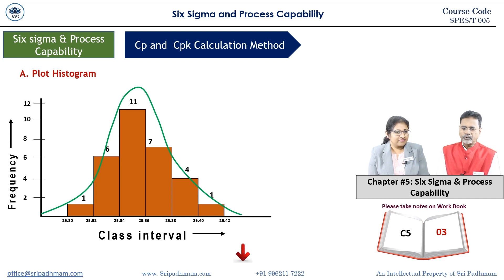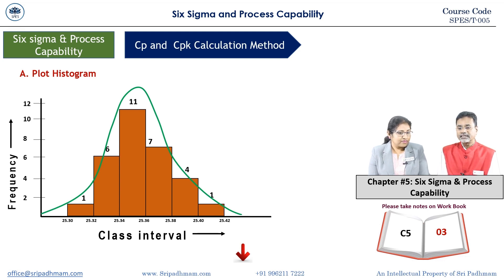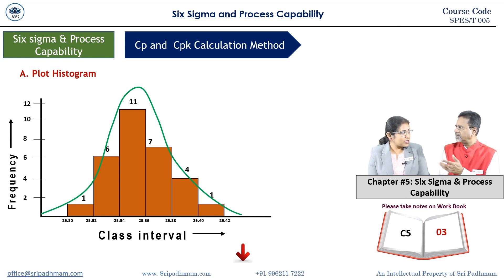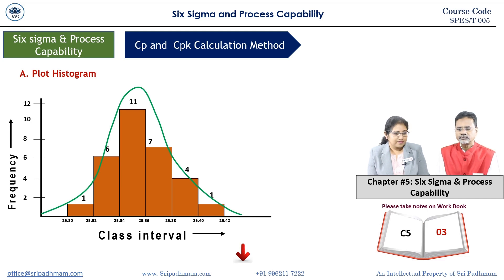The process is stable. We know the process has normality and stability — no special cause variations, so it is a stable process. However, all stable processes need not be capable processes. Capability is calculated separately. The mode is at the peak point of the FD curve — the Gaussian curve. The distribution nature is normal, confirmed by the mirror image symmetry.